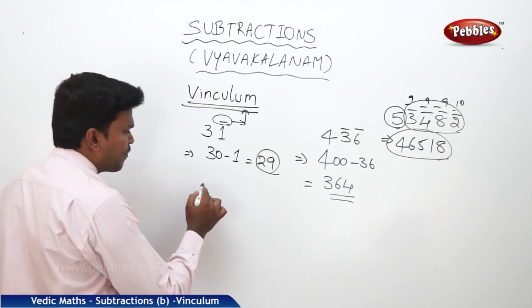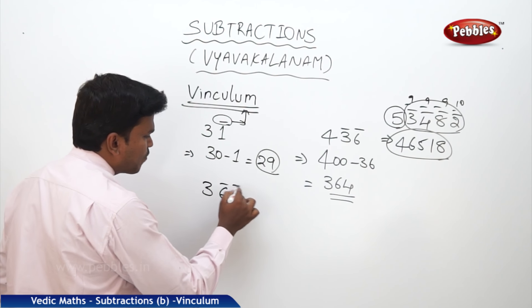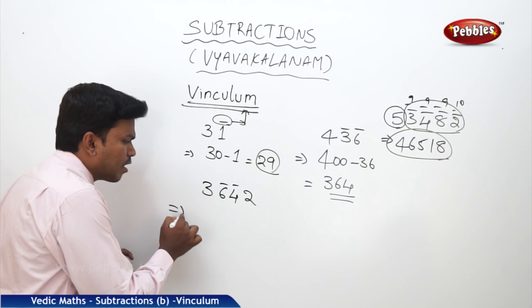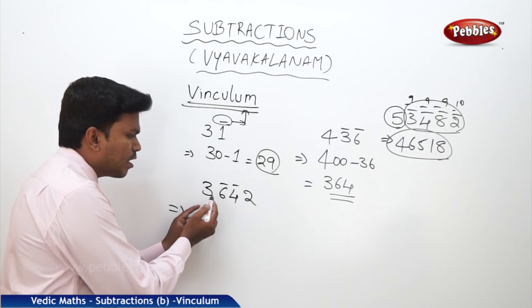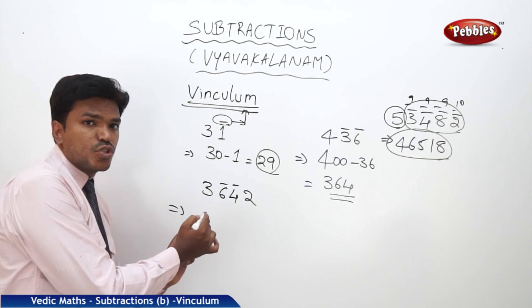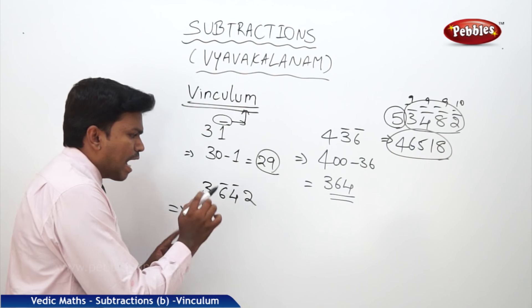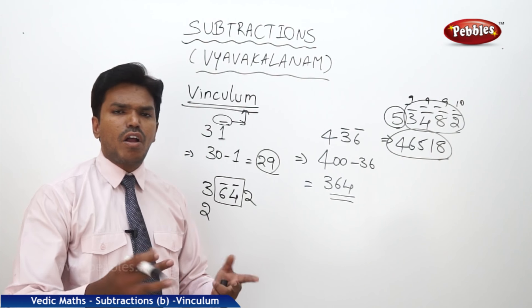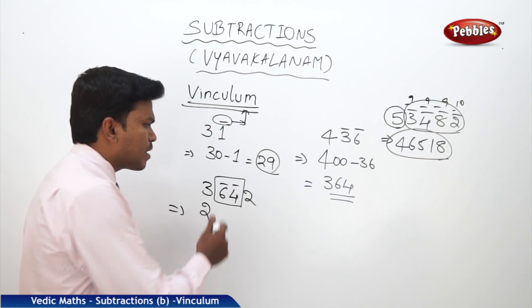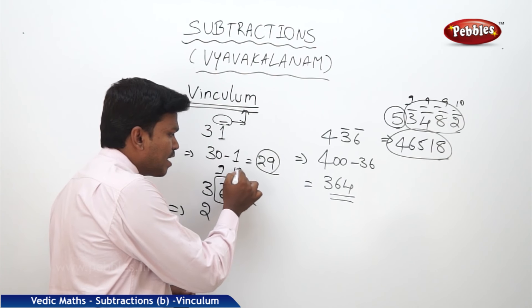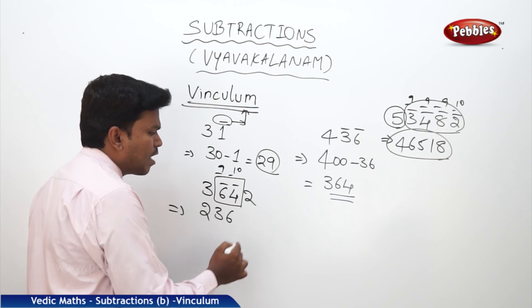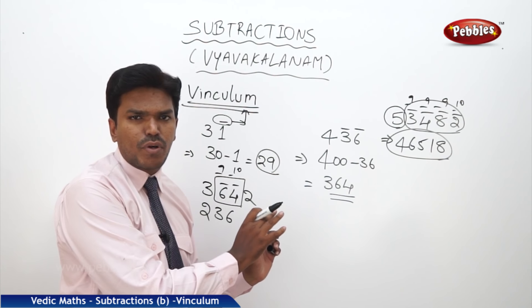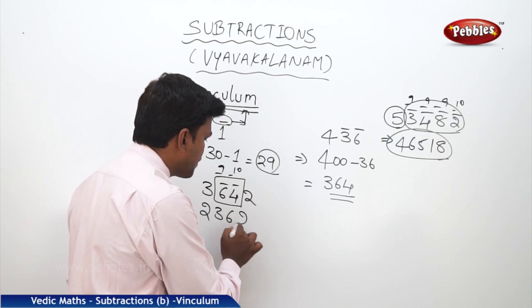One more example: 3, 6 bar, 4 bar, 2. I want to convert this number. The digit before the bar is 3, so reduce it by 1 — it becomes 2. The bar is on only 2 digits: 6 and 4. Apply all from 9, last from 10 for these two numbers: 9 minus 6 is 3, and 10 minus 4 is 6. Then drop the 2 as it is since it has no bar. So your answer is 2, 3, 6, 2.